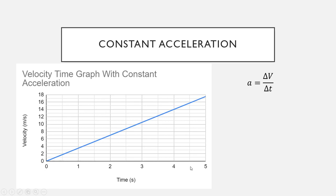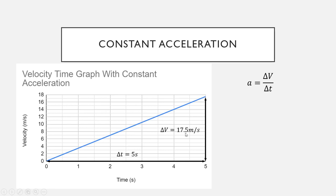We can take any two points on the graph, but it's simplest to use zero because that saves us from having to do any subtractions. Looking at this distance along the time axis, we've gone from zero seconds to five seconds, so our change in time delta t is simply five seconds. At five seconds we read the velocity off the graph, and that is 17.5 meters per second. So in five seconds our change in velocity is 17.5 meters per second. We substitute to get acceleration equals 17.5 over 5.